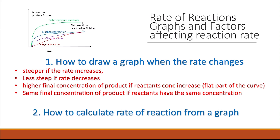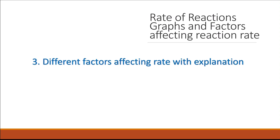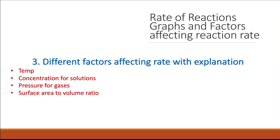You need to know how to calculate a rate of reaction from a graph, whether they ask you to calculate it at a certain point or calculate the average between two points. You also need to know the different factors affecting rate of reaction with explanation in terms of collision rate: temperature, concentration of solutions (concentration only affects solutions, not gases, but pressure affects gases), surface area to volume ratio, and the use of a catalyst. You should be able to explain why a catalyst increases the rate by lowering the activation energy, providing an alternative pathway for the reaction with lower activation energy.